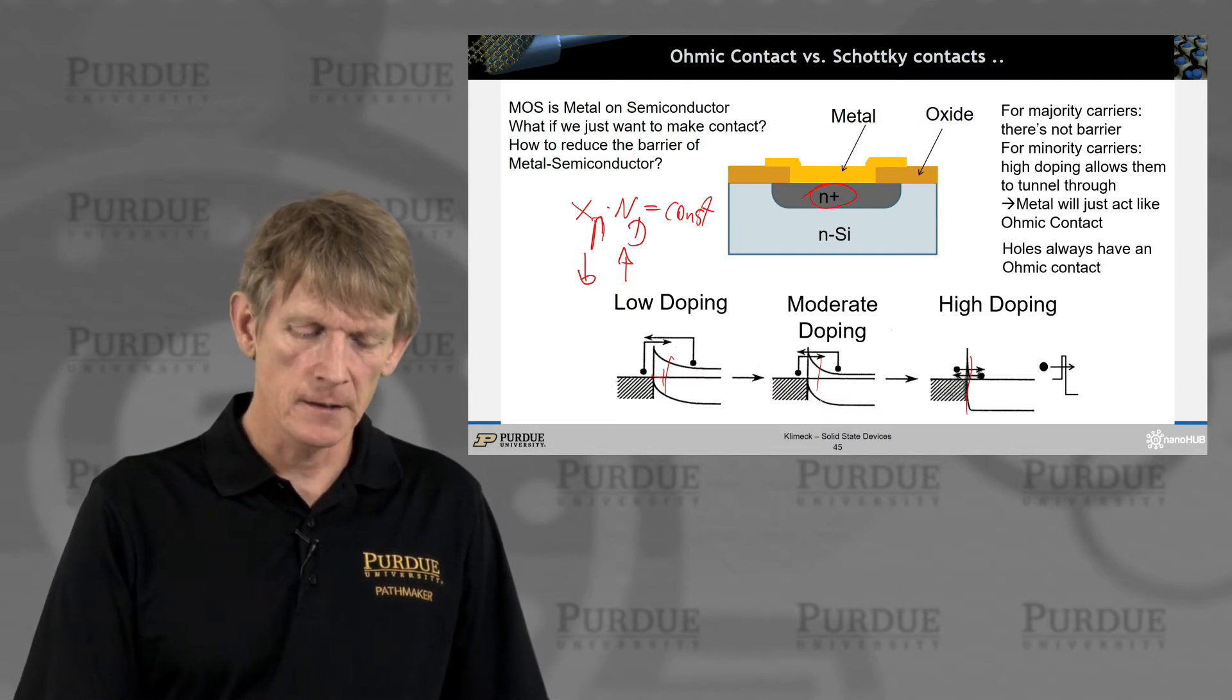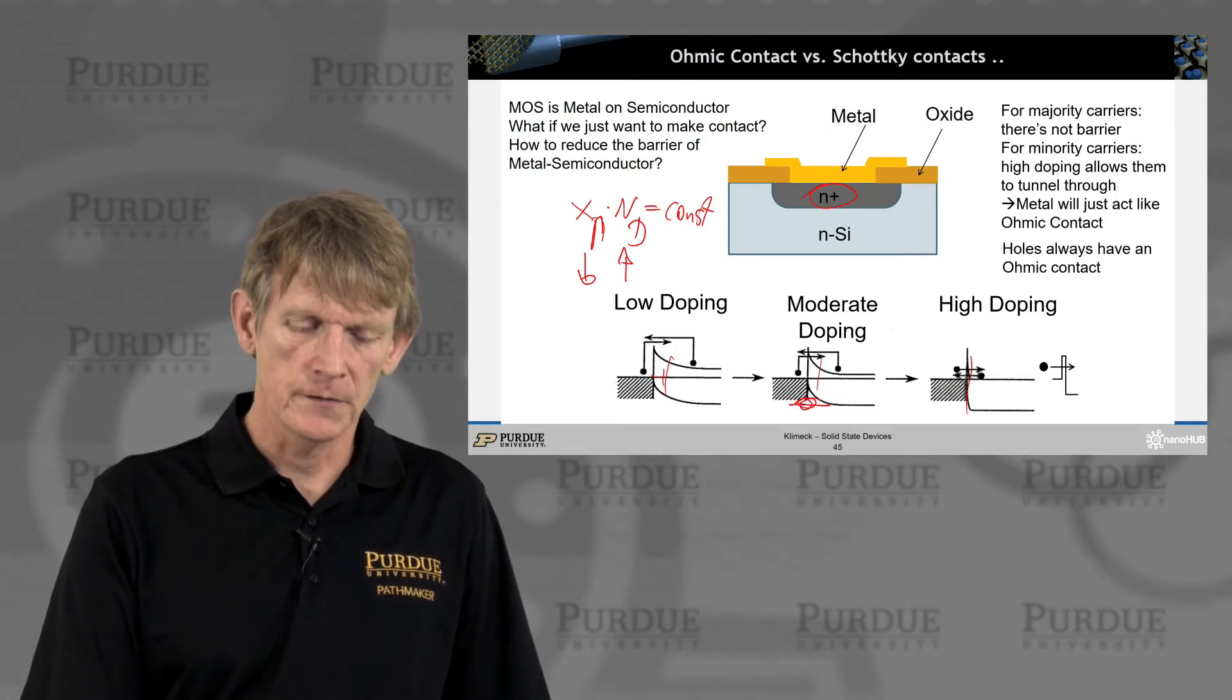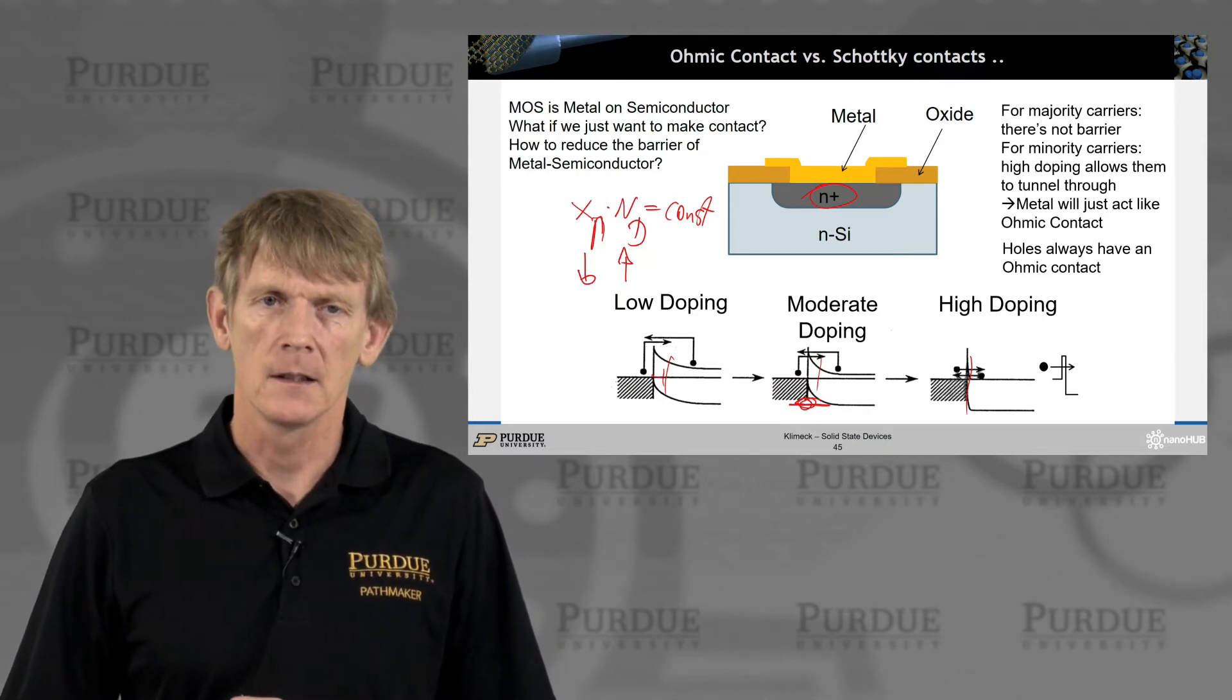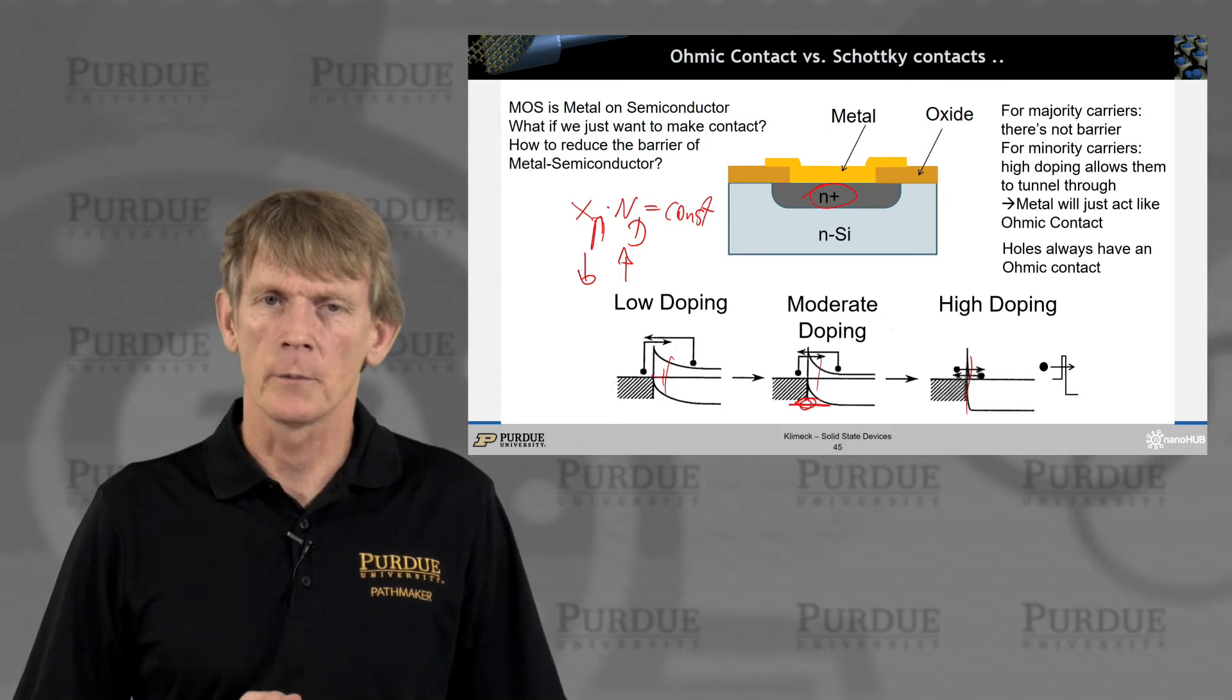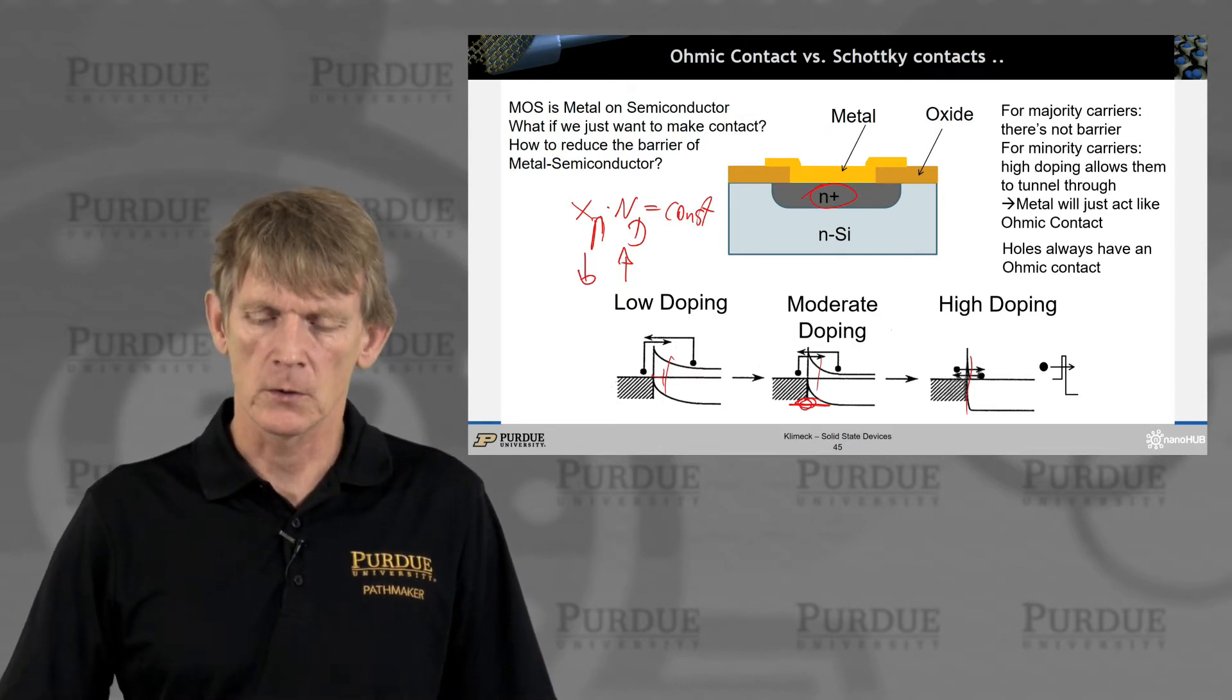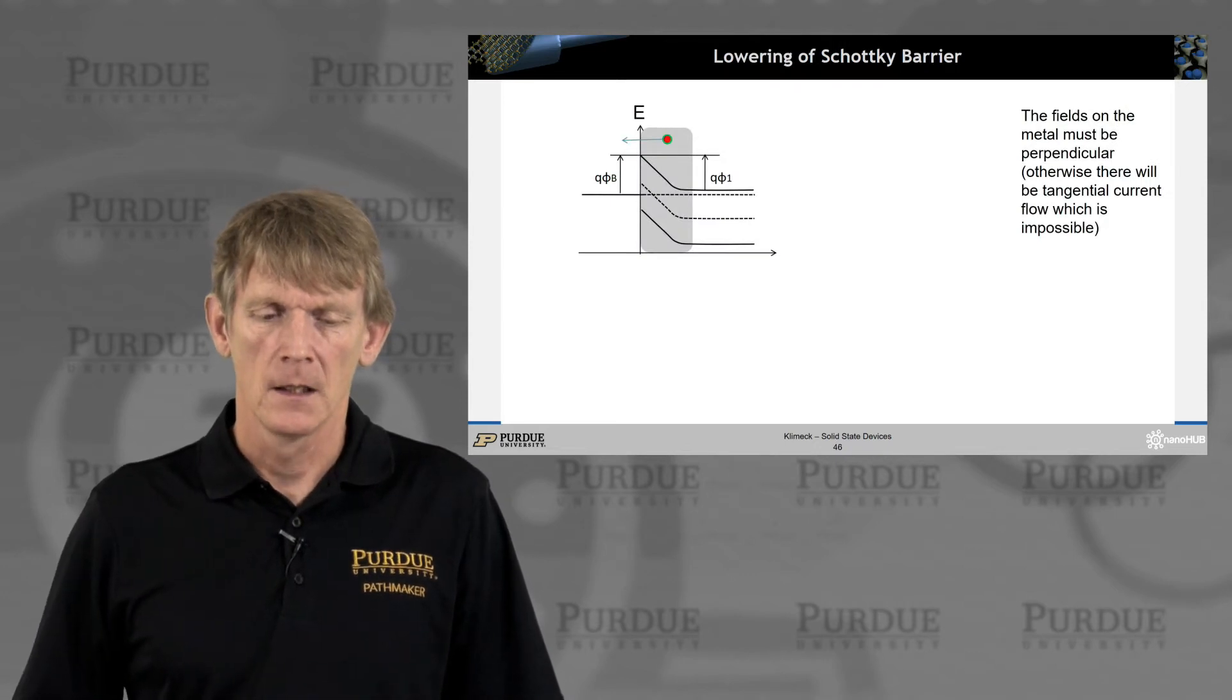And of course, if you look at this more carefully here, the electrons can always flow. So a P-type metal semiconductor device is always ohmic. You don't have a barrier as such, so you always have a strong ohmic contact.